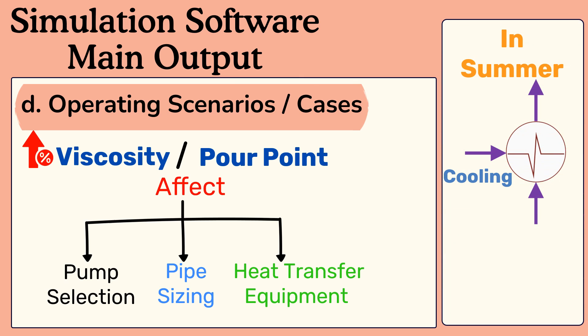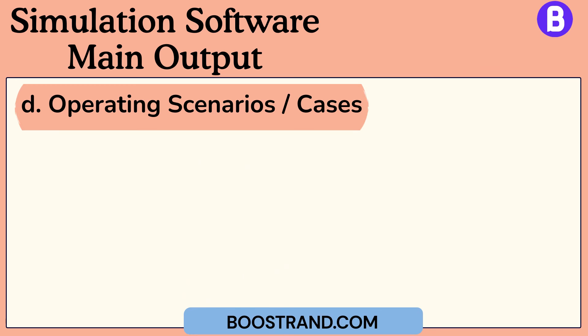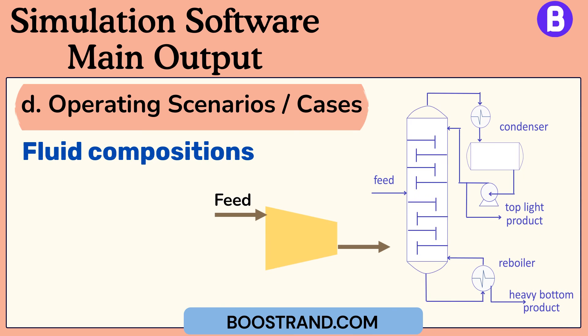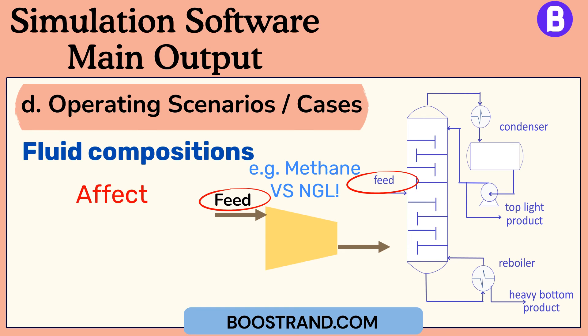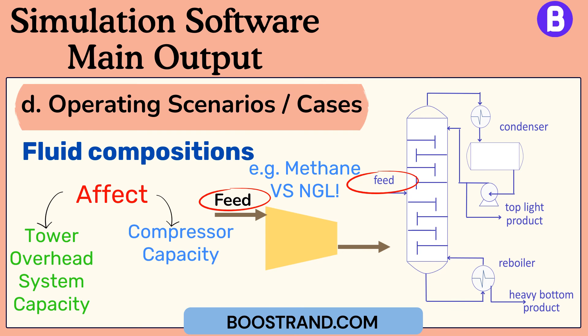In summer, air and water coolers will perform worse than in winter, and so on. Other cases involve fluid compositions — for example, when the feed gas contains more light ends in some cases than in other operating cases, which can highly affect the capacity of the tower overhead system and compressor capacities.